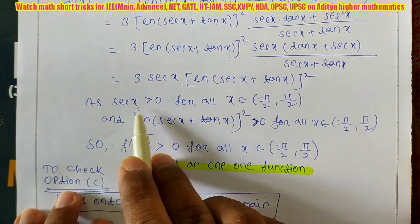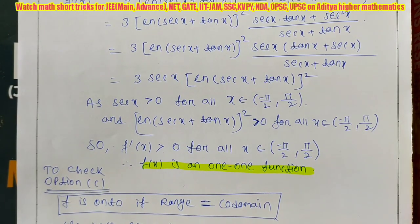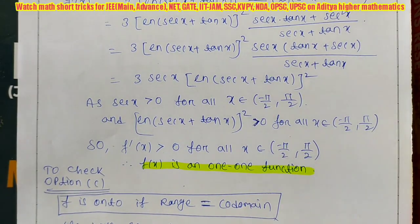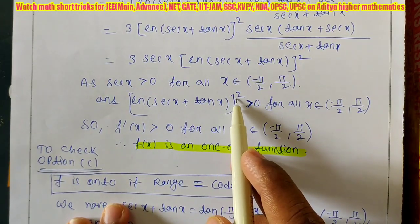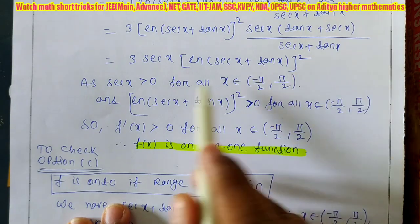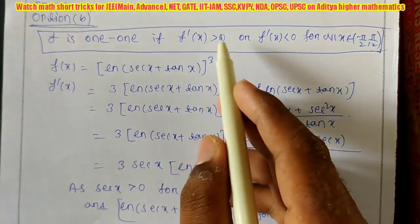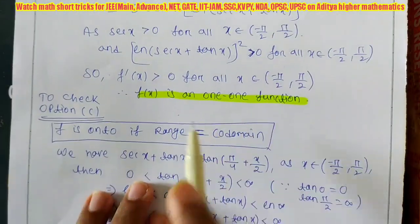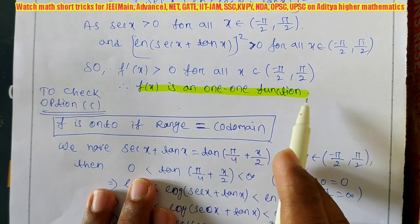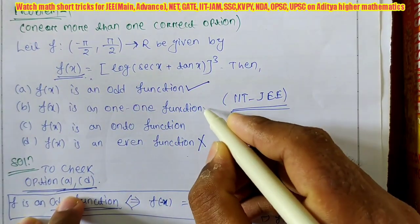We know that sec x > 0 for all x ∈ (-π/2, π/2) because in the first quadrant all functions are positive, and sec(-θ) = sec θ so negative angles also give positive values. Also, since it is whole square, log(sec x + tan x)² ≥ 0. Therefore f'(x) = 3·sec x·[log(sec x + tan x)]² > 0 for all x in the domain, meaning f is strictly increasing and hence one-to-one. Option B is correct.